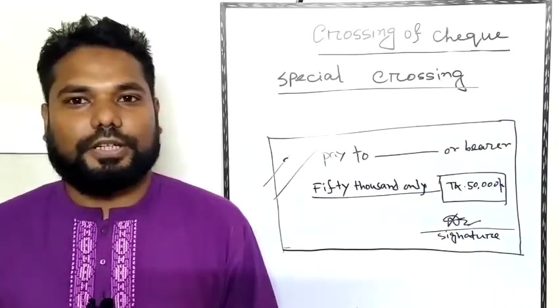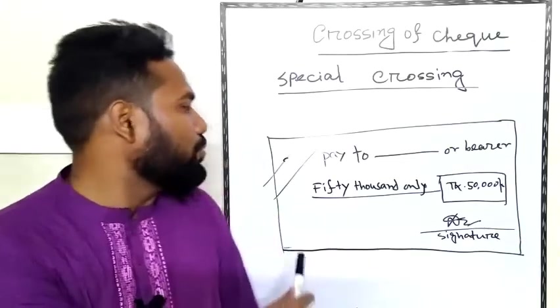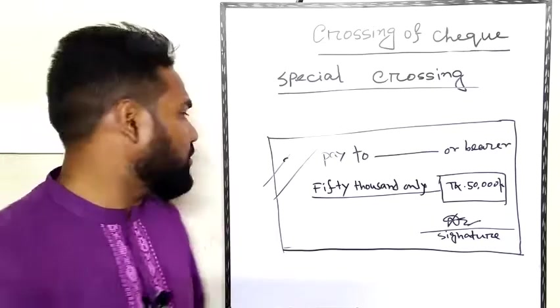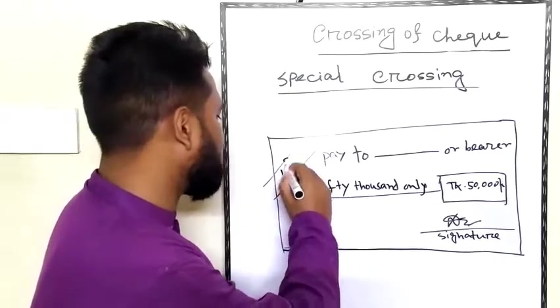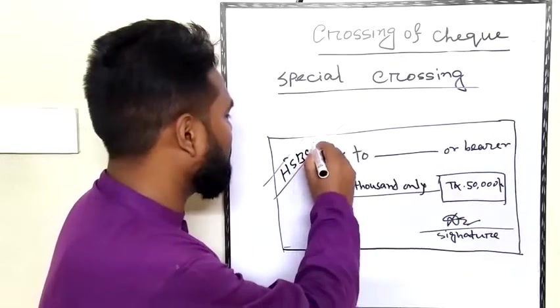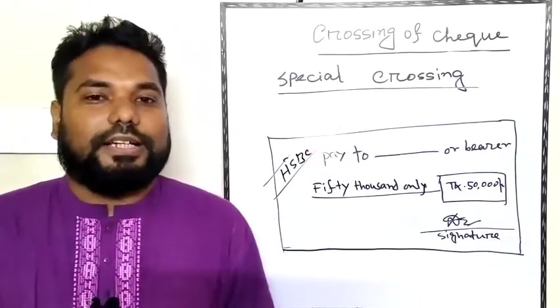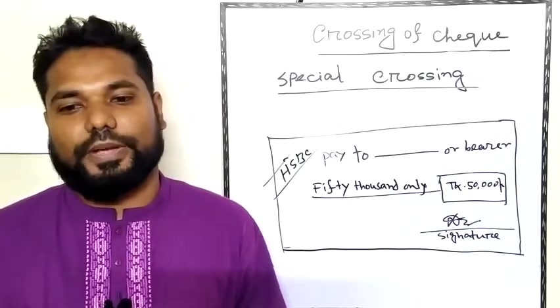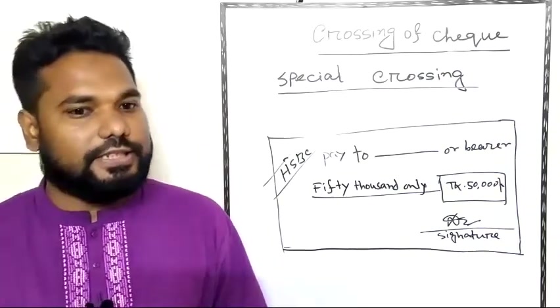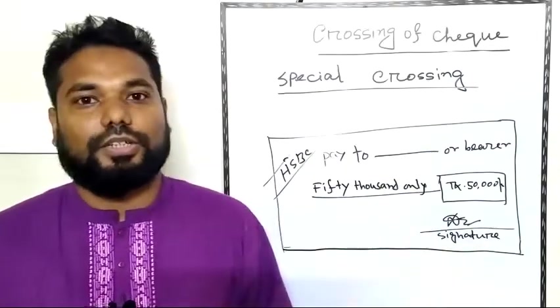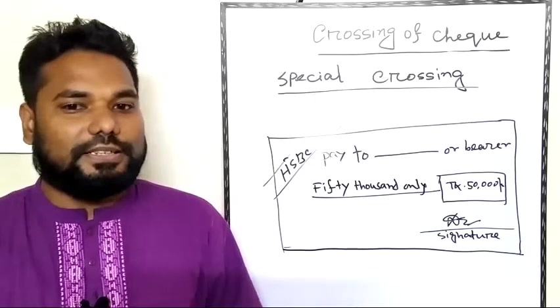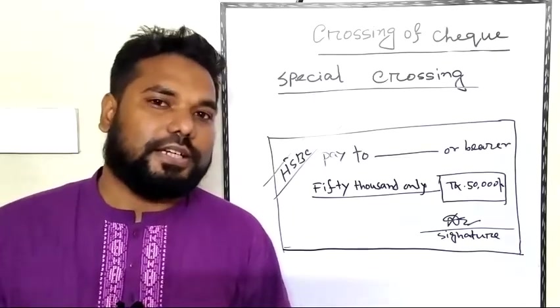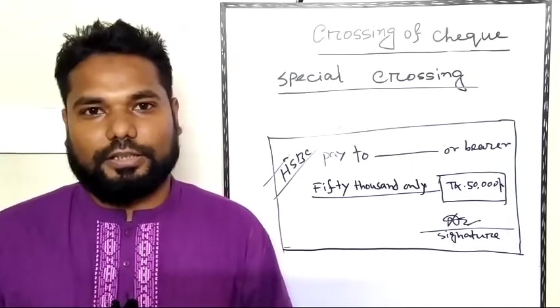Let's discuss special crossing. In special crossing, a specific bank name is written on the check. If the bank is written, the payment goes through that bank account. If the account doesn't exist, the check will need to be collected accordingly.